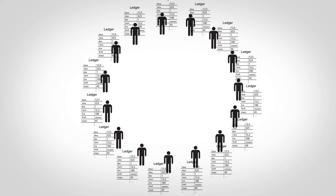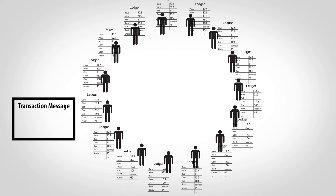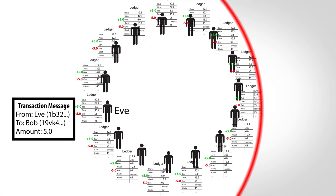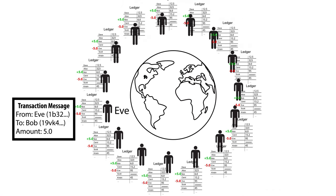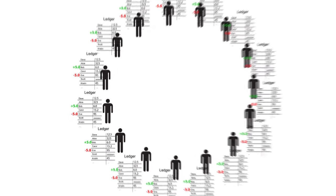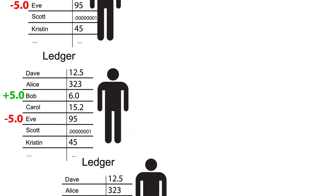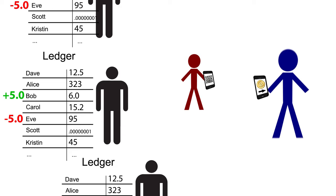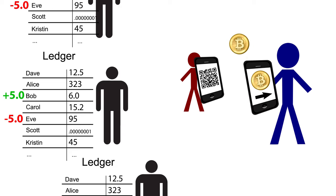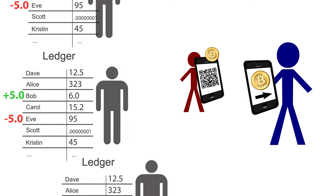If everyone maintains their own ledger, how are all the ledgers kept in sync as money is transferred? At a basic level, when you want to send money, you simply tell everyone else by broadcasting a message with your account number, the receiver's, and the amount. Everyone across the entire world then updates their ledger. Note that this describes how Bitcoin works for power users who help maintain the system; you can also just use the system to send and receive money without maintaining a ledger.